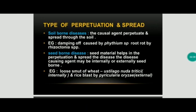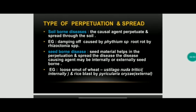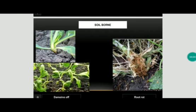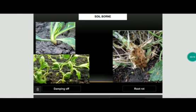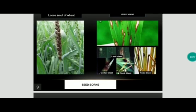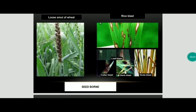In seed-borne disease, the seed material helps in the spread of the disease. The agent may be internally or externally seed-borne. Internally seed-borne example: loose smut of wheat, caused by Ustilago nuda tritici. Externally seed-borne example: rice blast, caused by Pyricularia oryzae. These are the examples for soil-borne diseases — damping off caused by Pythium species and root rot caused by Rhizoctonia species. Examples of seed-borne disease: loose smut of wheat and rice blast.